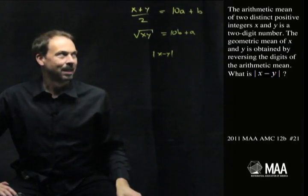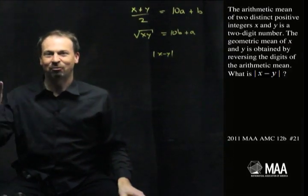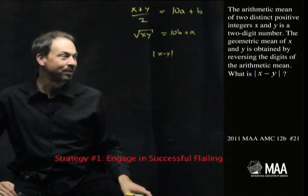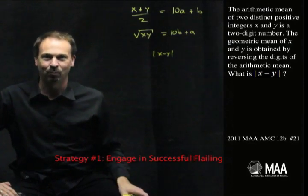What am I going to do? I don't really have any sense of what I'm going to do. I'm just going to try stuff out and hope for the best. That's actually strategy number one: engage in successful flailing. It might lead to some false paths along the way. That's okay.